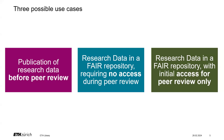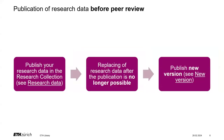Let's take a look at the first use case. The publisher requires that the data is already published before peer review. You can do this as usual in the research collection by creating and publishing a new research data entry. Please note that once the data is published, it cannot be replaced anymore due to our terms of use. Instead, you can use the option to publish a new version of your data so that it will also be displayed in the research collection.